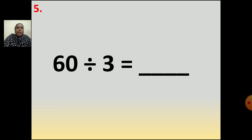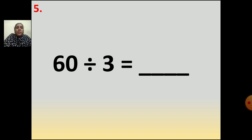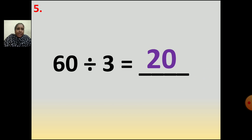Fifth question: 60 divided by 3 equals dash. You have to divide and find — in the table of 3 when you get 60. You can do it orally also. In the table of 3 when you get 6, 3 twos are 6, 2s are. You can take one zero from 60. So 60 divided by 3 is equal to 20. You can take 3 twos are 6 and take one zero from 60, so you will get the answer.